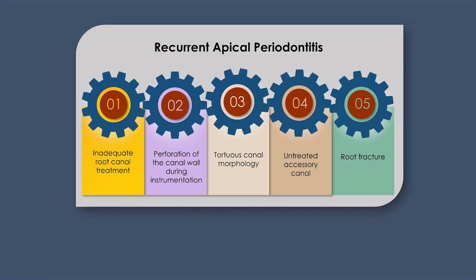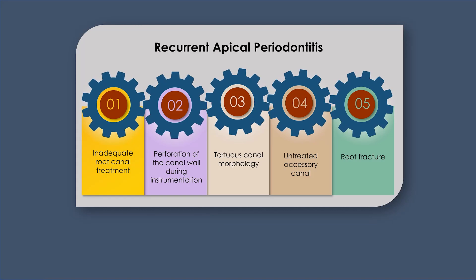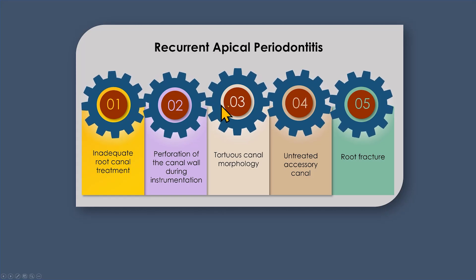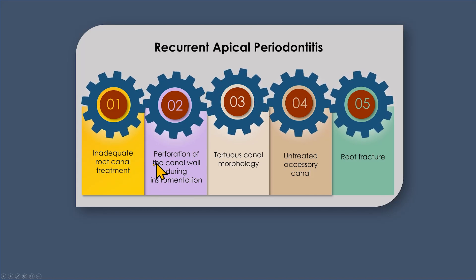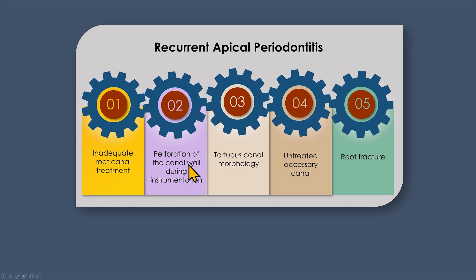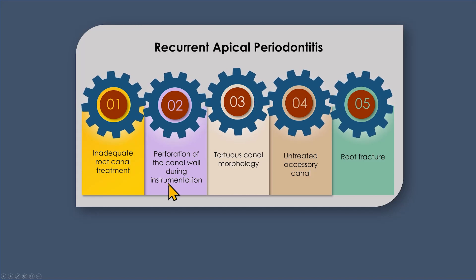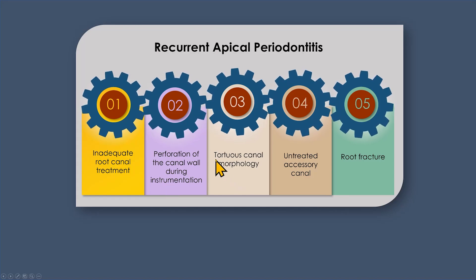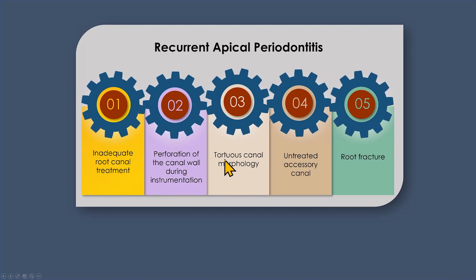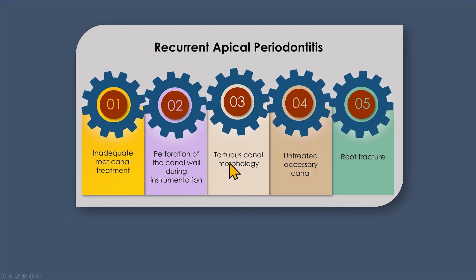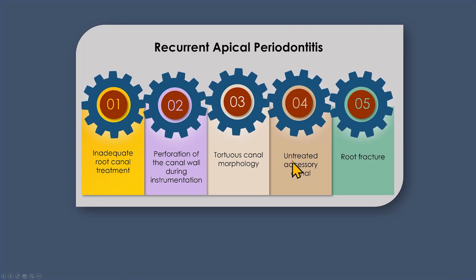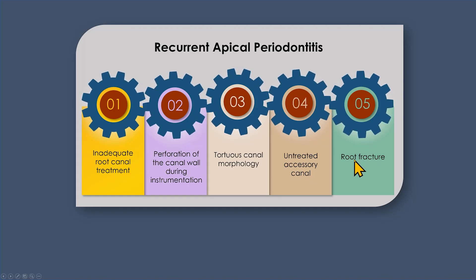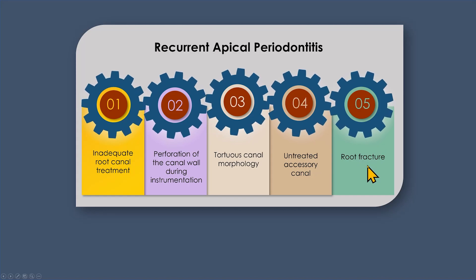Recurrent apical periodontitis can happen for different reasons. These are the five common reasons: inadequate root canal treatment, perforation of the canal wall during instrumentation, a tortuous canal that may not have been instrumented properly, an accessory canal that was not treated, and also a fractured root.